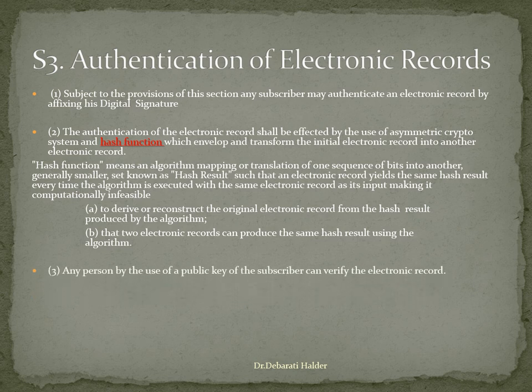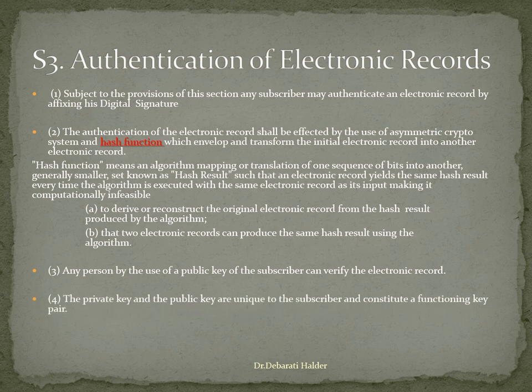Subsection 3 of Section 3 says any person by the use of a public key of the subscriber can verify the electronic record. Subsection 4 says the private key and the public key are unique to the subscriber and constitute a functioning key pair.